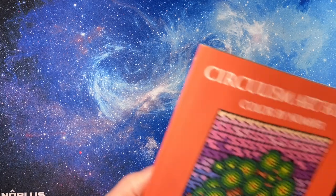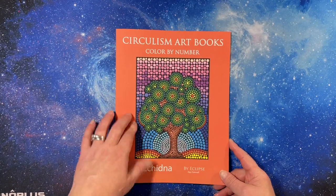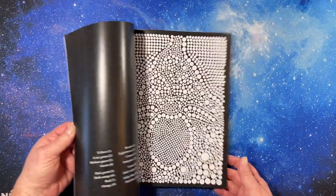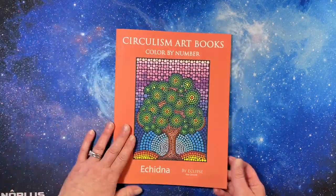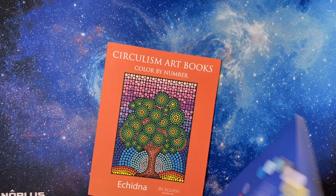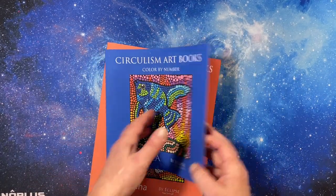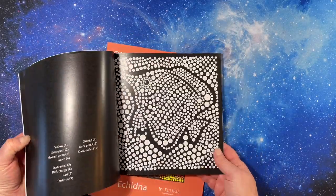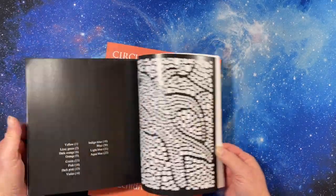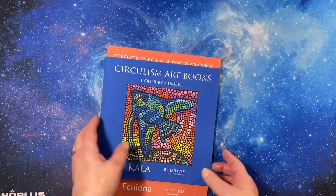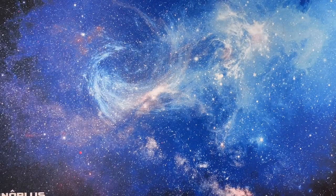I did pick up Circulism art book Echidna. Finally. I love their books. I also picked up Kala which is full of fish. Nothing but fish. And it looks really cool. I just love the way these bright colors and the way they color up.